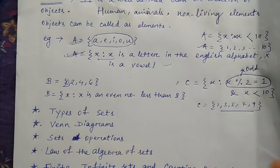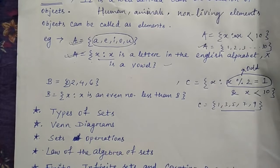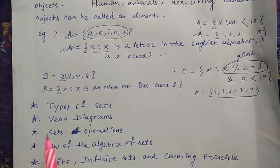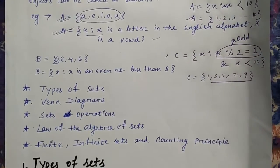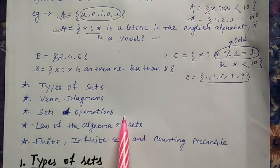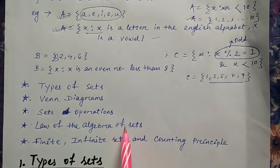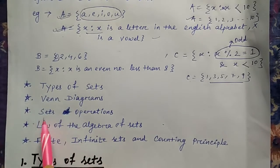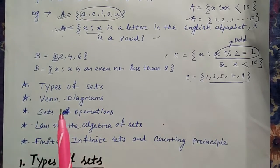So these are the elements of the set C. I think you are clear now. Then we'll see what are the next topics we are going to cover under set: that will be type of set, Venn diagram, set operations, law of algebra of sets.